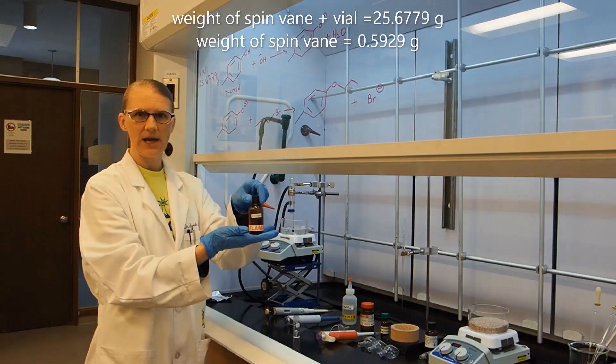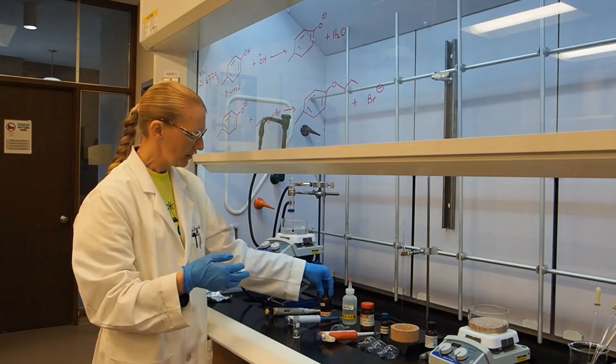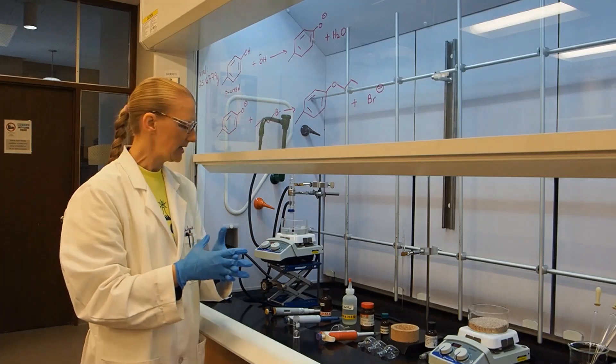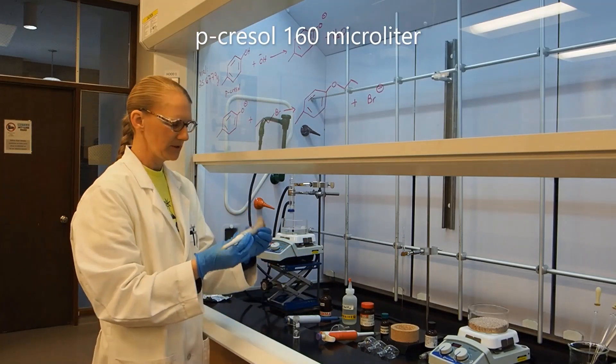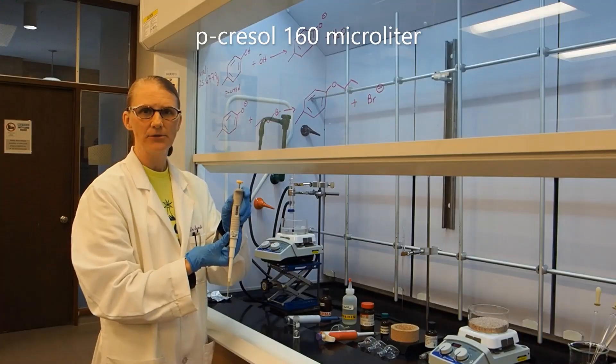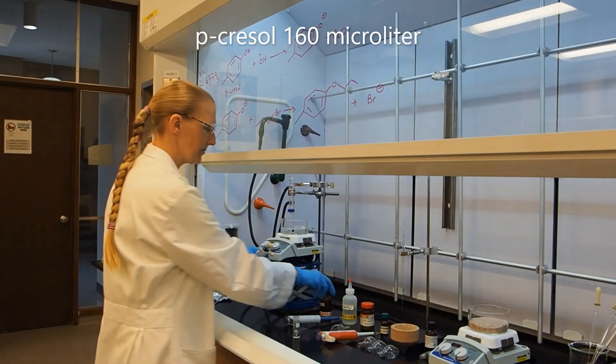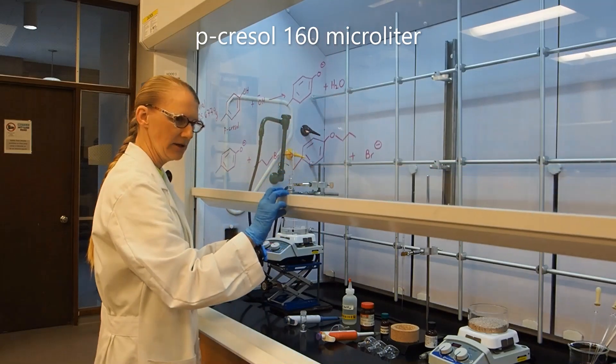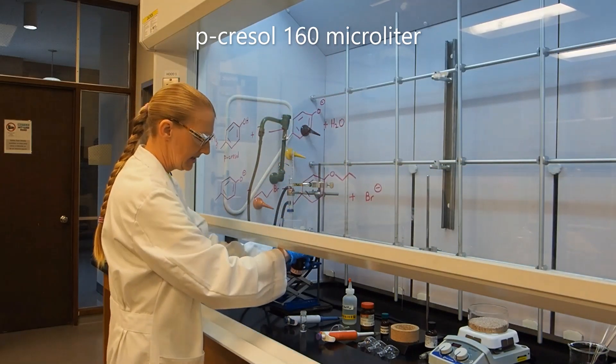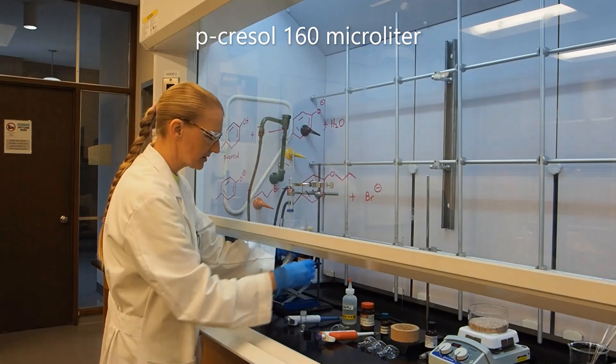The first reagent we're going to add is p-cresol. P-cresol is a sensitizer and an irritant, so I'm working with it in the hood. I'm going to measure out 160 microliters using an automatic pipette and add it to the vial. I'm going to keep the hood low because this is really not something I want to breathe or smell.